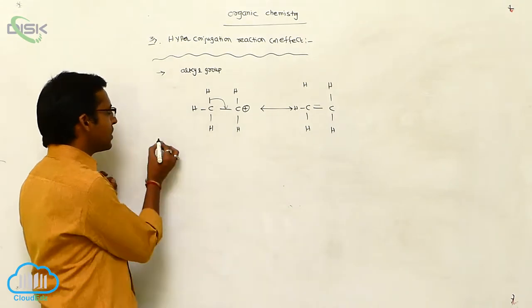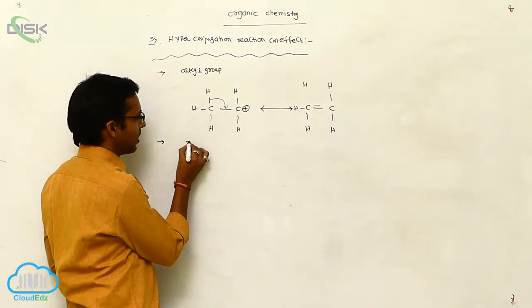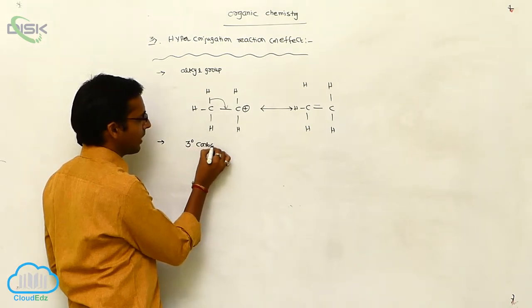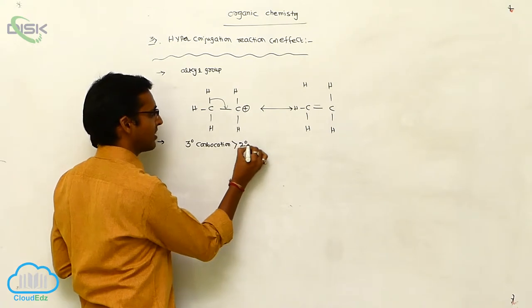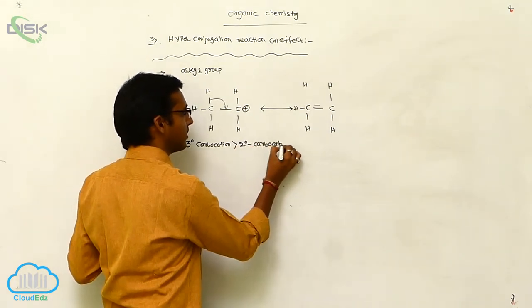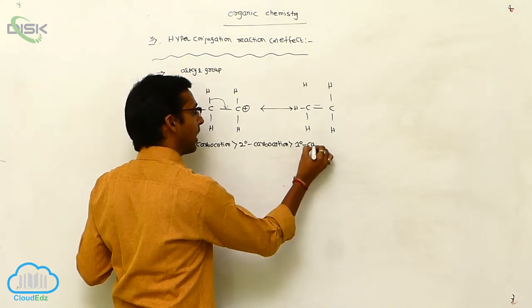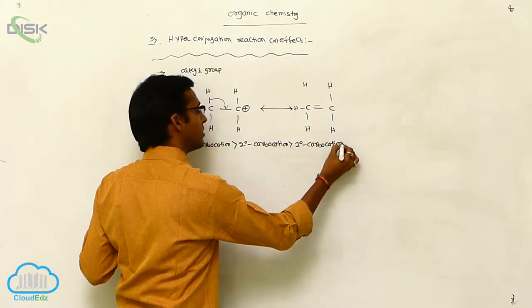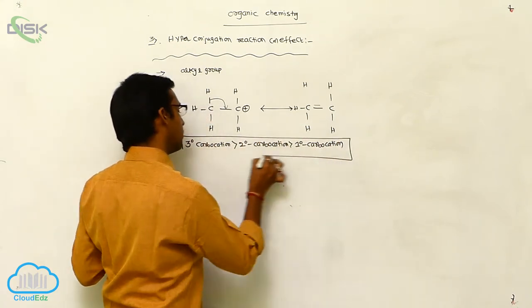According to the hyperconjugation effect, tertiary carbocation is more stable than secondary carbocation, which is more stable than primary carbocation. This is the stability order for carbocations.